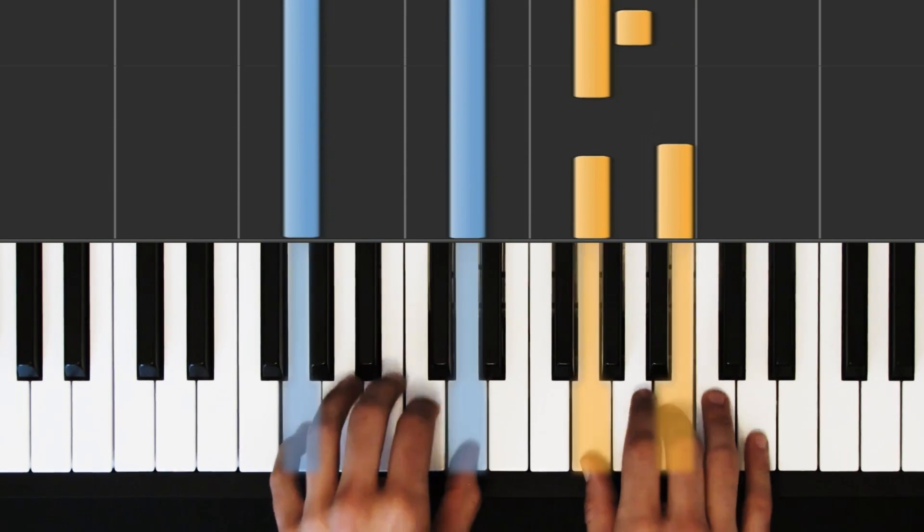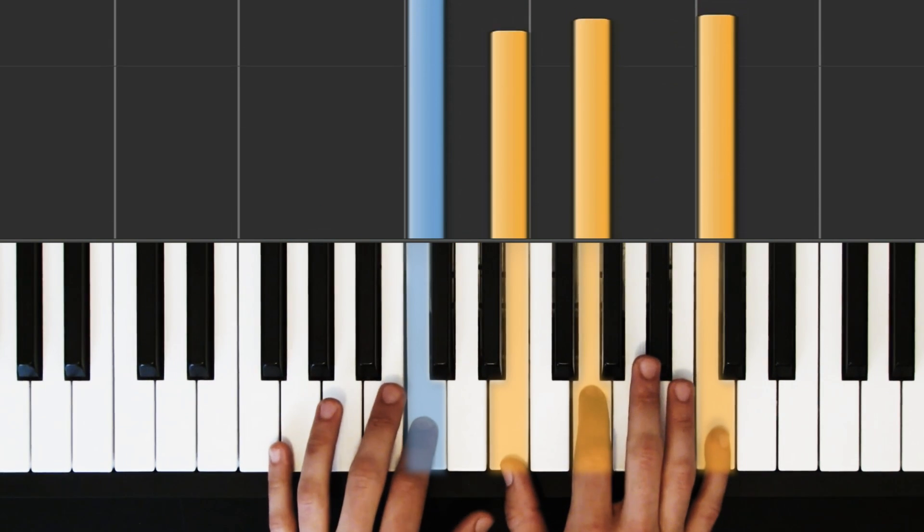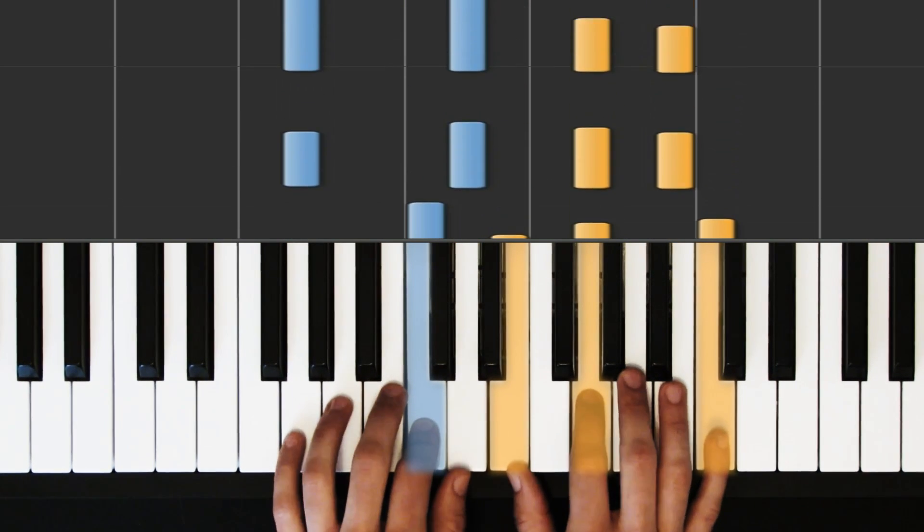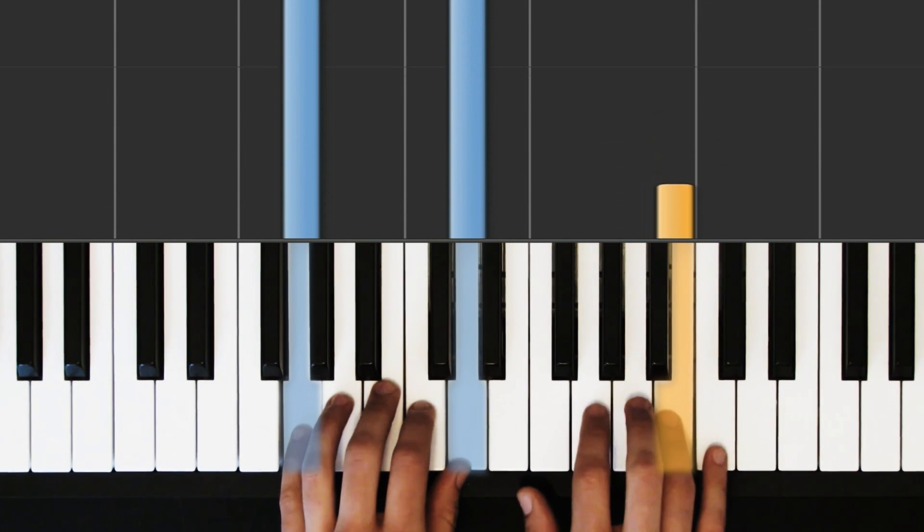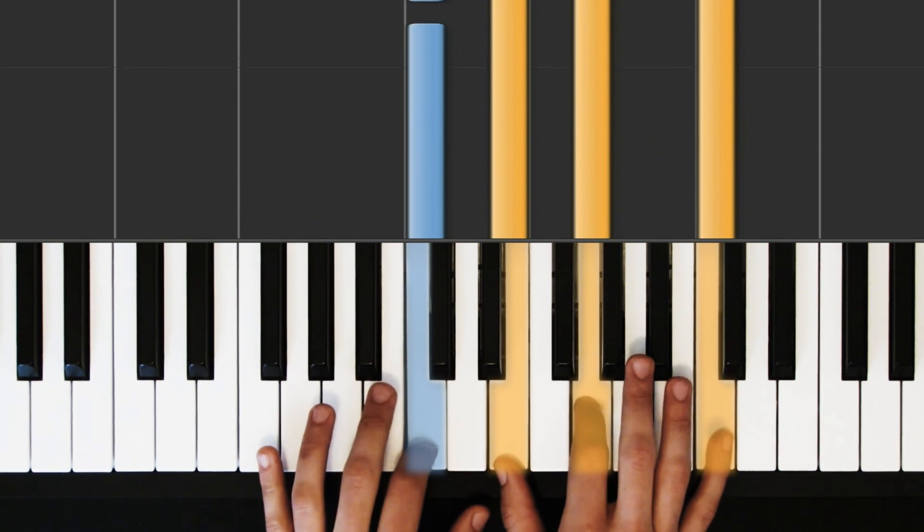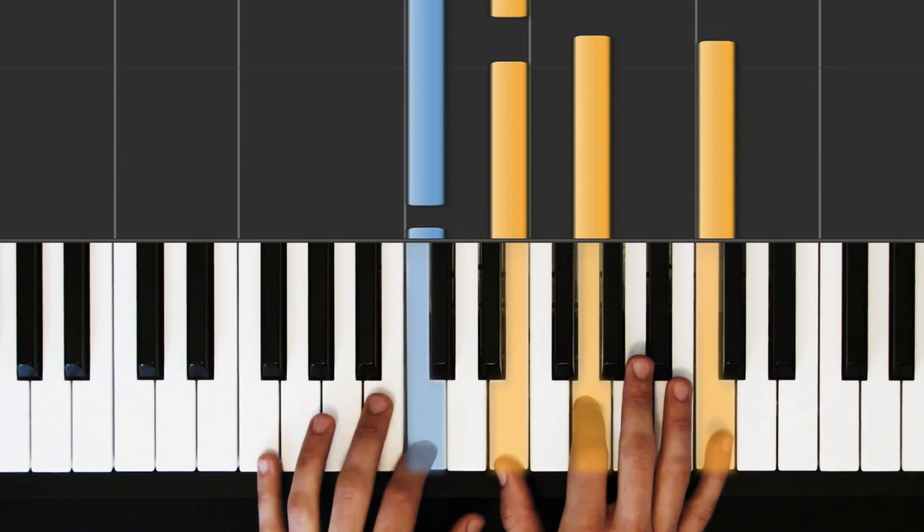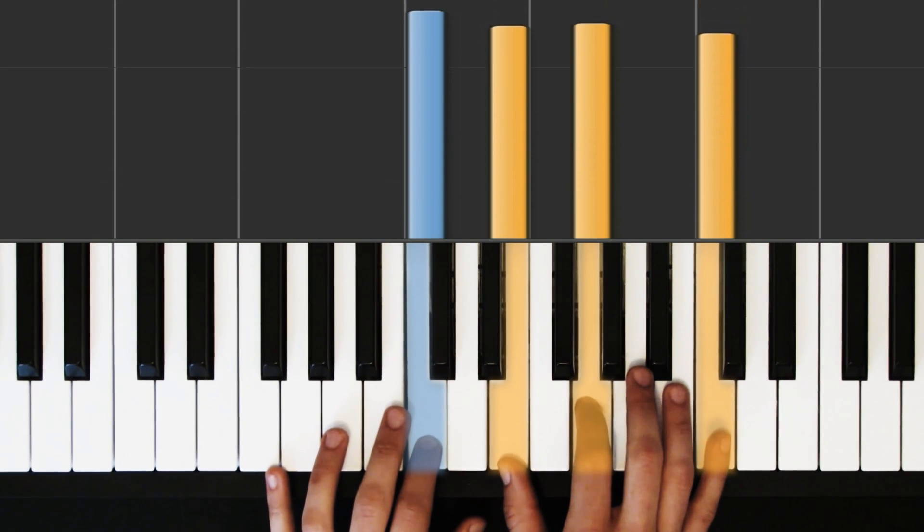We're going to play that one twice, and then G, A, B, C. So there's a couple single notes there. We're going to play G, A, B. Now the right hand pinky is going to play C next, but we're also going to play it with this whole chord. So left hand C, right hand E, G, C.